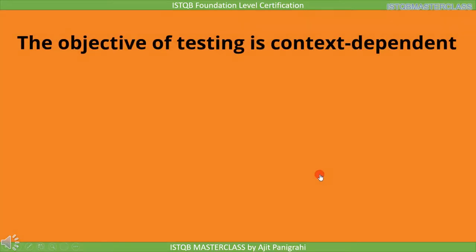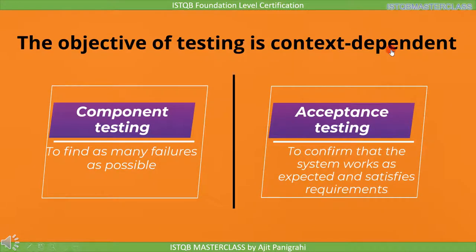Till now we discussed general testing objectives, whereas the objectives are context dependent. To understand this, let's look at two different testing levels: component level and acceptance level. When you perform testing at component level, your objective is to find as many defects as possible so that they are not found during operational use. Whereas at the acceptance level, your objective is to check if the system works as per the customer's requirements. So at different testing levels, the objective changes.